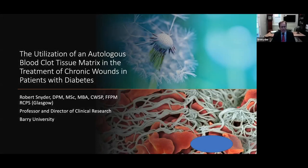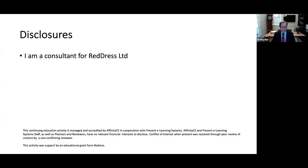Hello, my name is Dr. Rob Snyder and I'm professor and director of clinical research at Barry University School of Podiatric Medicine. My talk today is going to surround the utilization of autologous blood clot tissue matrix in the treatment of chronic wounds in patients with diabetes. As far as my disclosures are concerned, I am a consultant for Red Dress Limited, which is a company out of Israel.